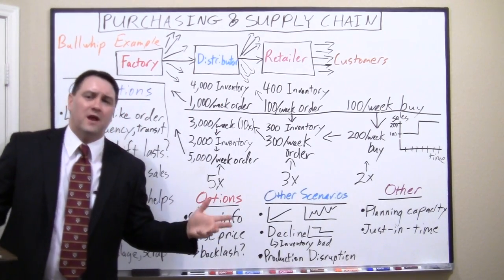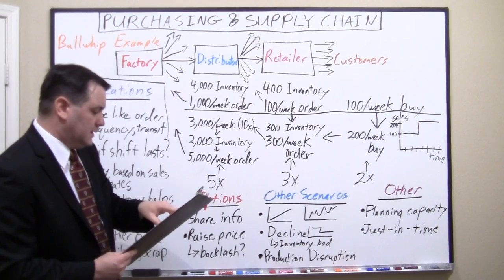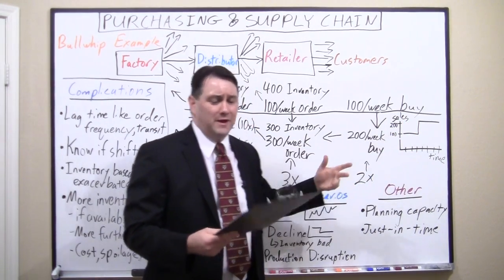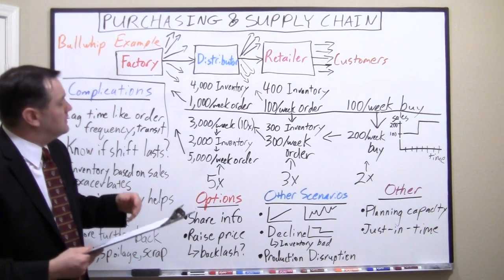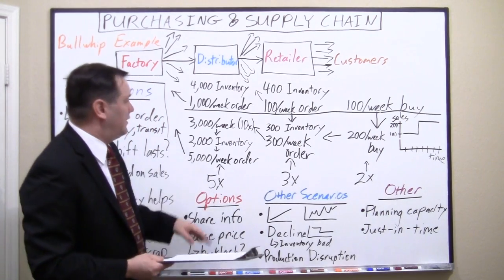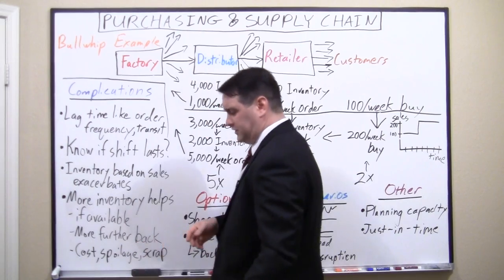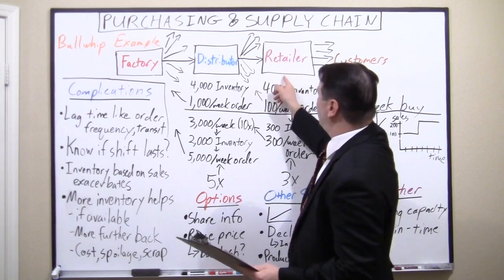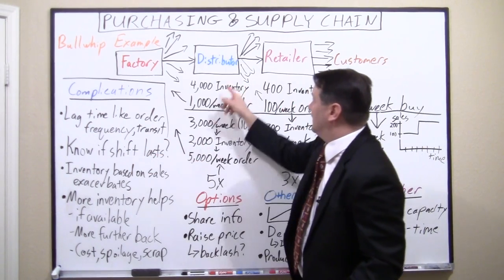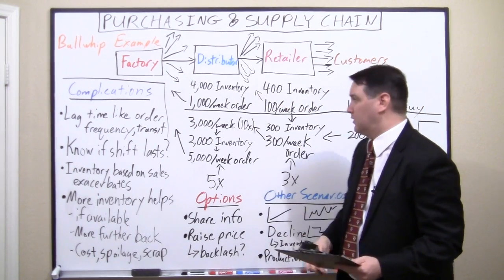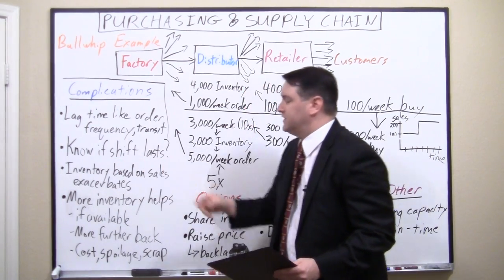The 2x, 3x, 5x multipliers in my example are just from the numbers I used. A few things to bear in mind: I've given it a big shock — a doubling of demand — but even a 10% increase would show the same concept. This is largely driven by inventory replenishment, but there are other factors. First, lag time: if there's a delay in order frequency or transit time, they'll chew through inventory until the next order arrives, making that order even larger. So lag time exacerbates the bullwhip effect.